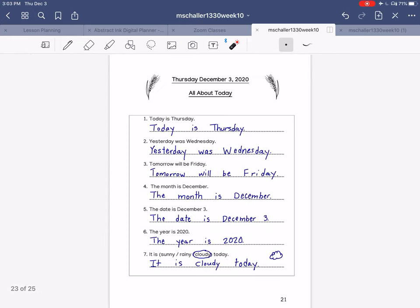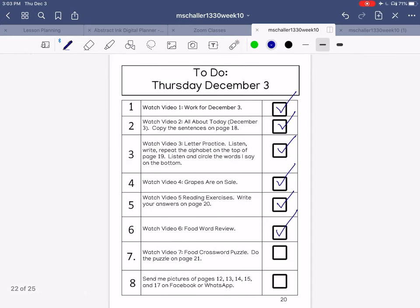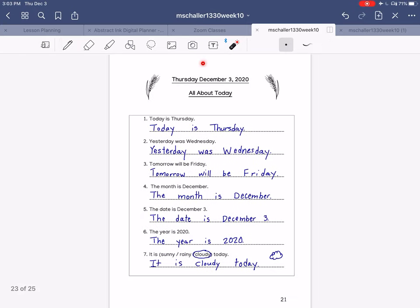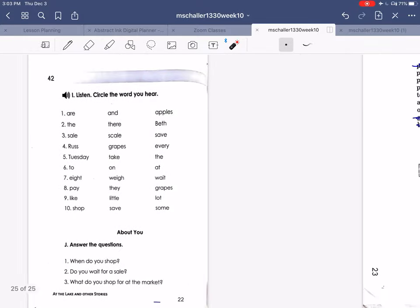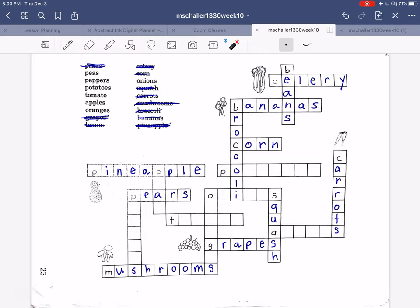And when you are finished, you can check off number seven. And only three pictures today. I need a picture of this page all about today, a picture of the reading exercises, and a picture of the crossword puzzle.